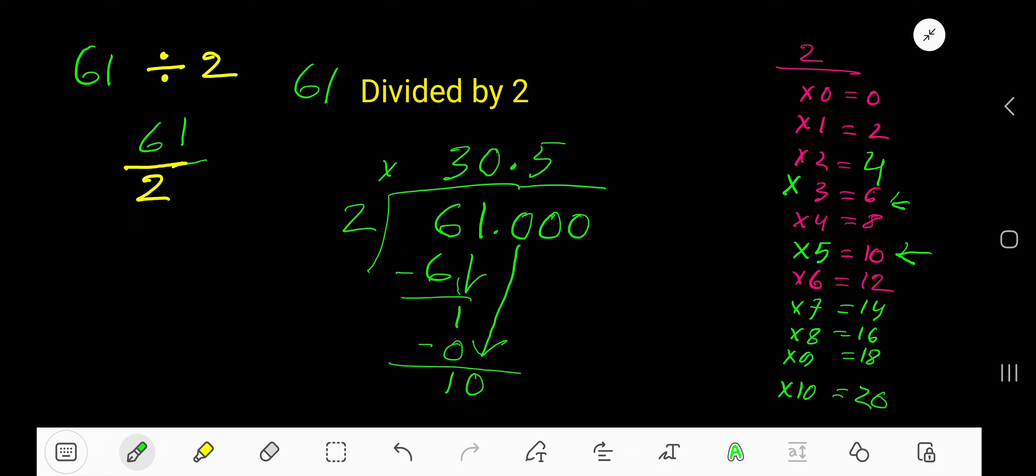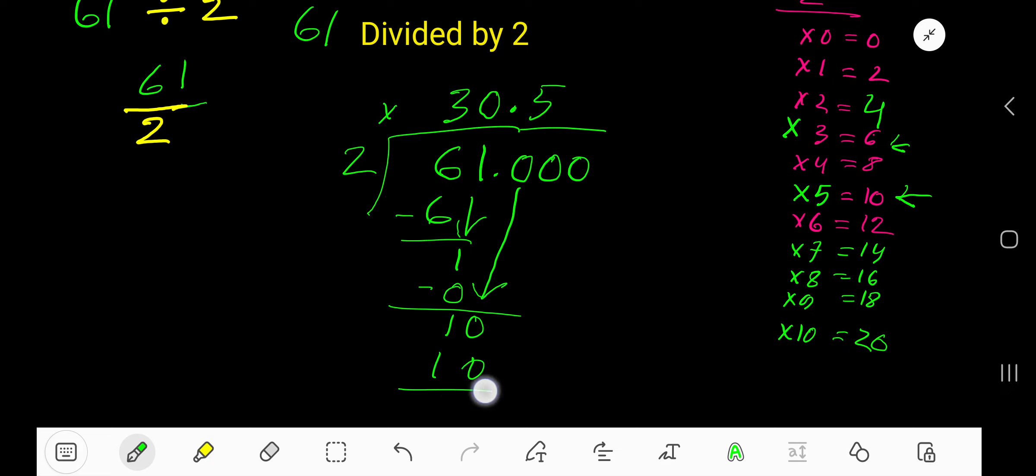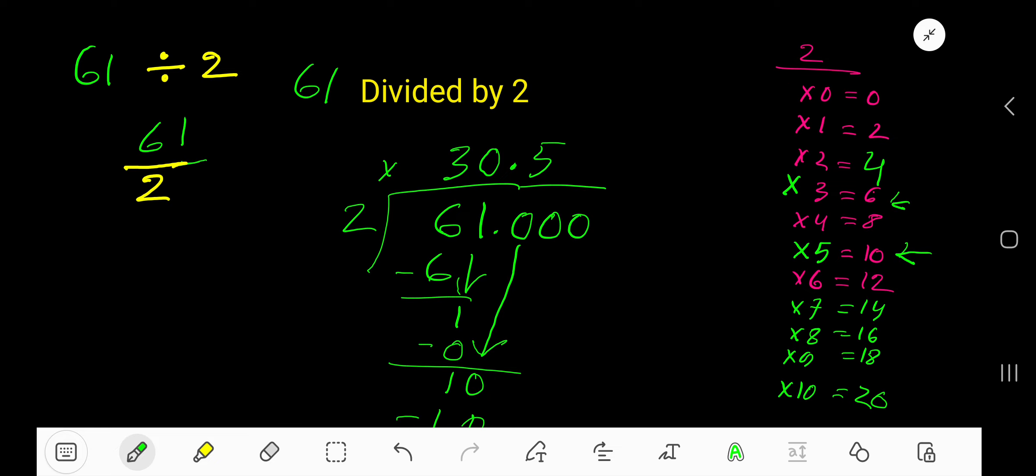5 times 2, which is 10. If you subtract, you are getting 0. That is, your remainder is 0 and your quotient is 30.5. So, your answer is 30.5.